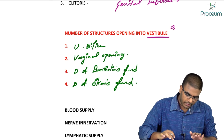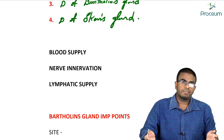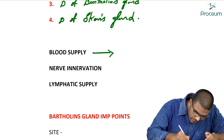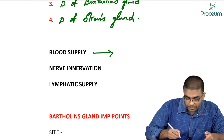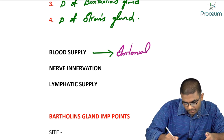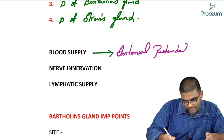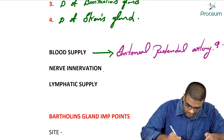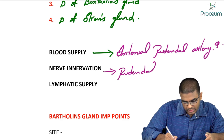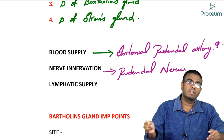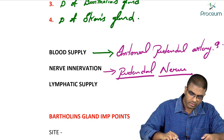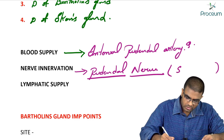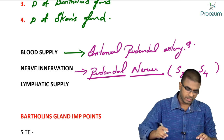Regarding blood supply, the vulva gets its blood supply from the internal pudendal artery. Nerve innervation is from the pudendal nerve. The root value of the pudendal nerve is from S2 to S4 segments.